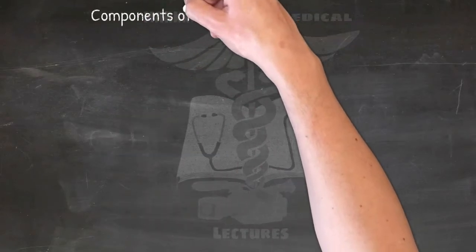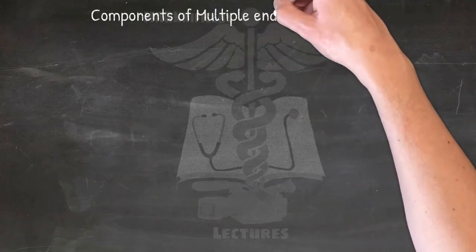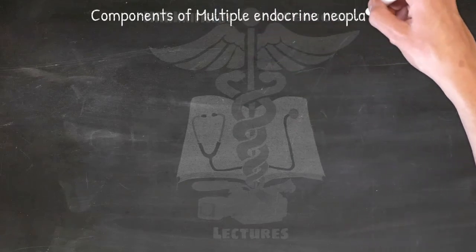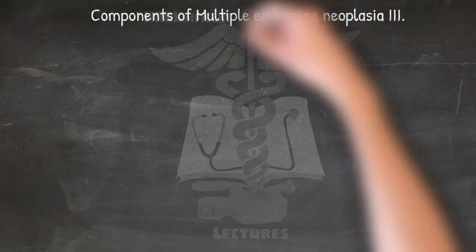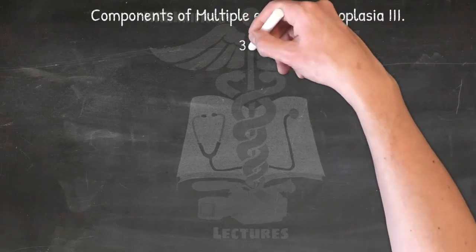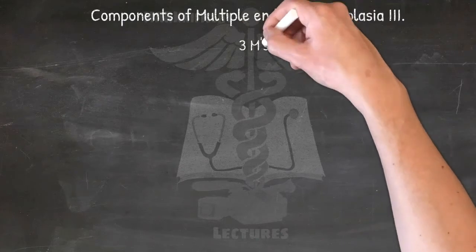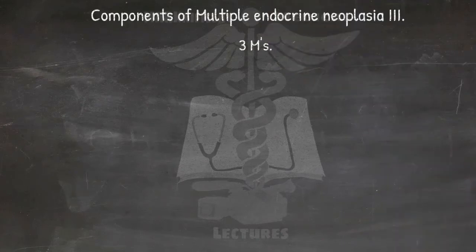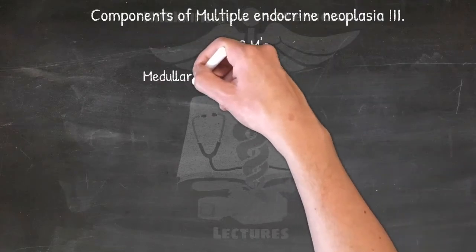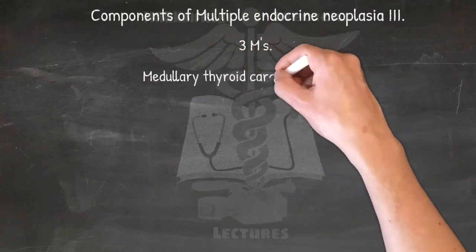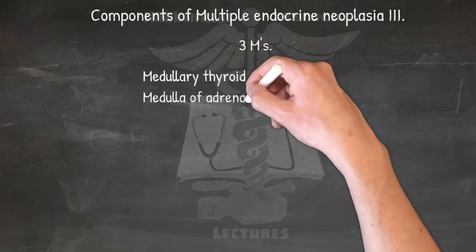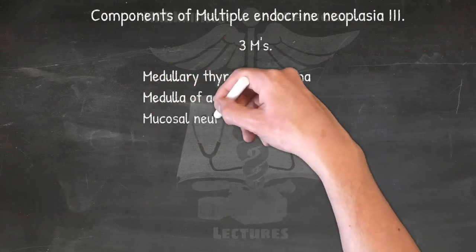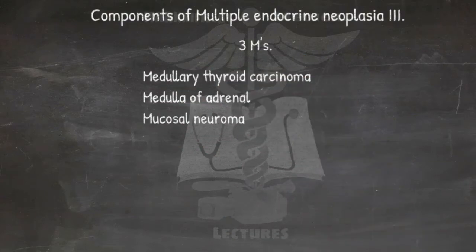Components of multiple endocrine neoplasia 3: this is a disease of 3M — Medullary thyroid carcinoma, Medulla of adrenal (pheochromocytoma), and Mucosal neuroma.